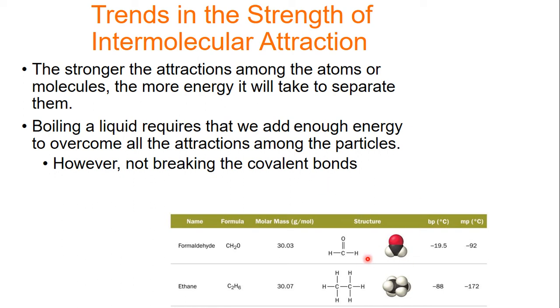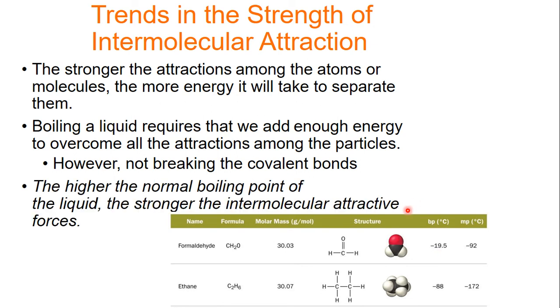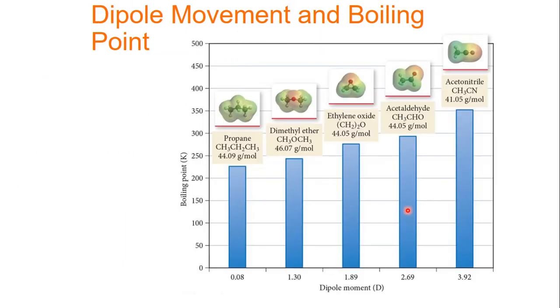If we compare formaldehyde and ethane, they have about the same molar mass and same shape. Formaldehyde is polar with an oxygen, ethane is not. Formaldehyde has a much higher boiling point and melting point because it has much stronger intermolecular forces. In general, the higher the boiling point, the stronger the intermolecular forces are. We can look at this: as our dipole increases, shown here on the X axis, the boiling point of each one of these molecules also increases, shown on the Y axis.